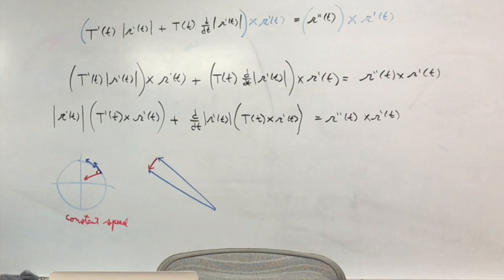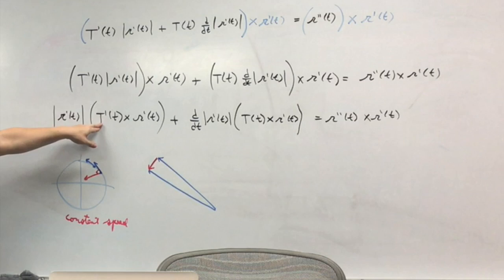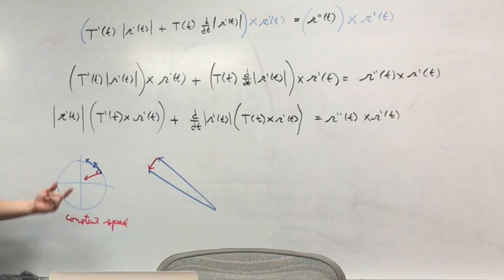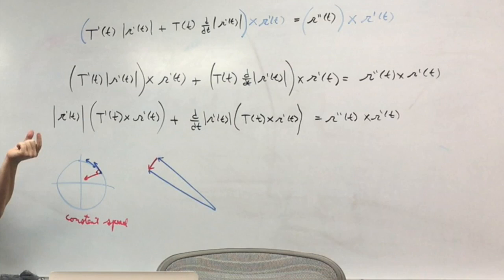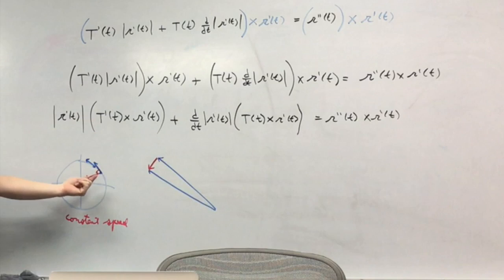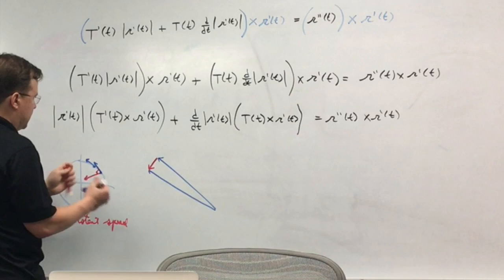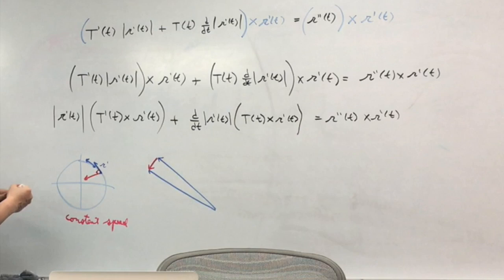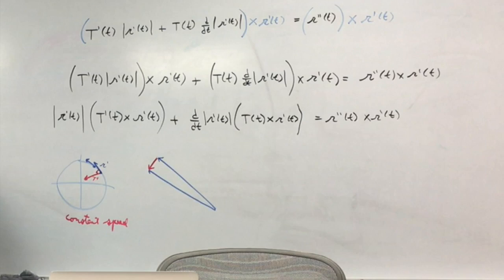If your speed is changing it won't point exactly toward the center, but at constant speed the acceleration vector is perpendicular to the tangent vector. So T prime is perpendicular to R prime. The cross product of perpendicular vectors gives magnitude equal to the product of the magnitudes times sine of the angle between them.